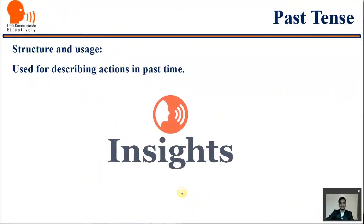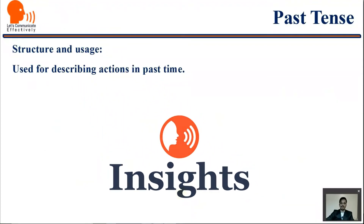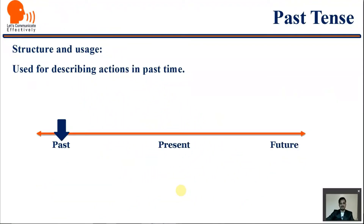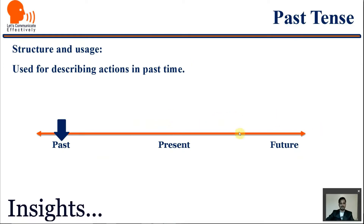Past tense is used for describing actions in past time. This is the representation: present, future, and it is now past.